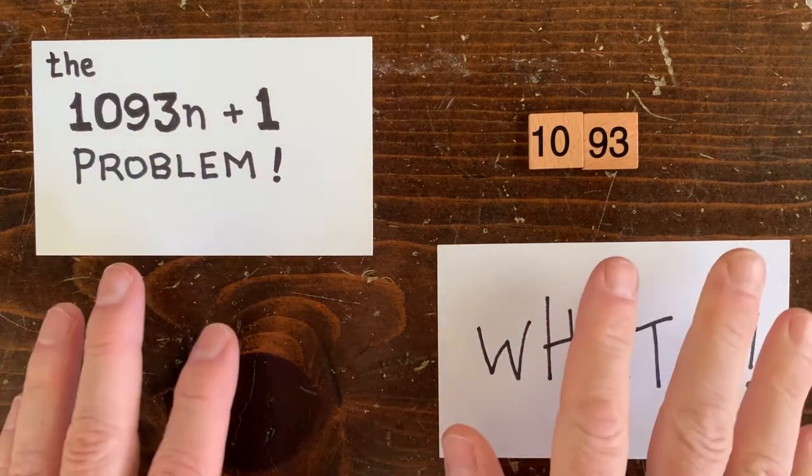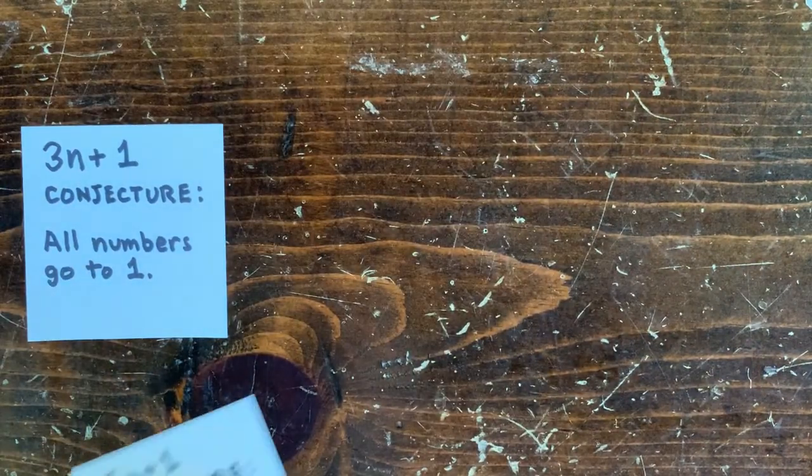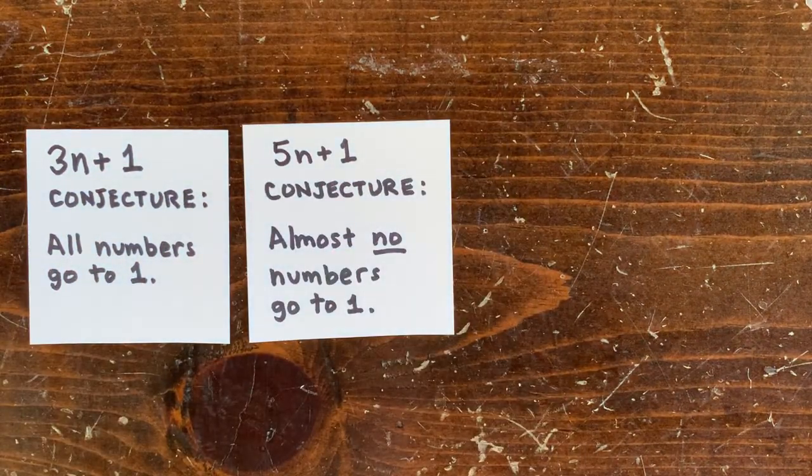In the 3n plus 1 problem, we conjecture that every number goes to 1. And in the 5n plus 1 problem, we conjecture that almost no numbers go to 1.